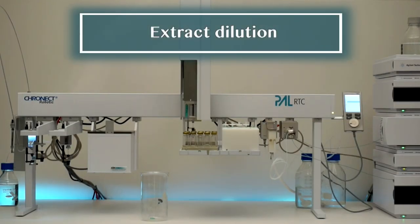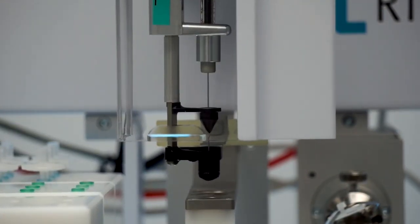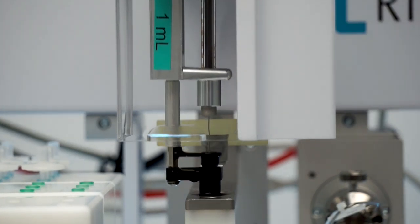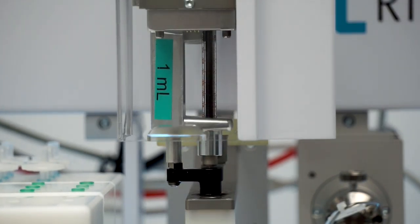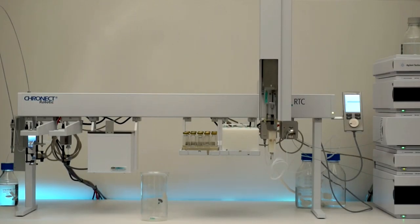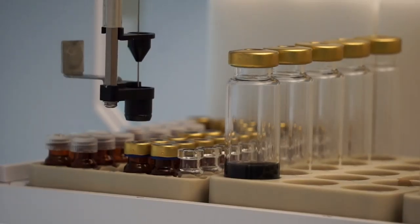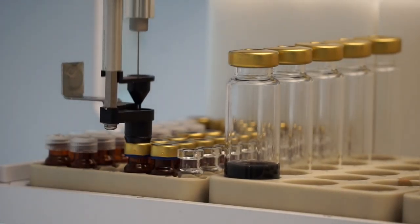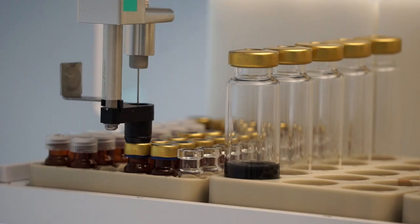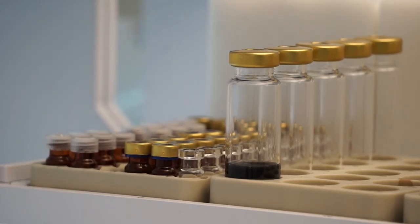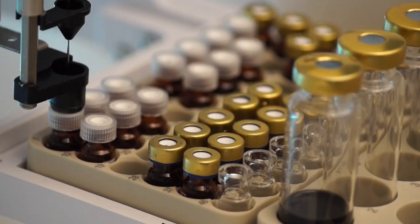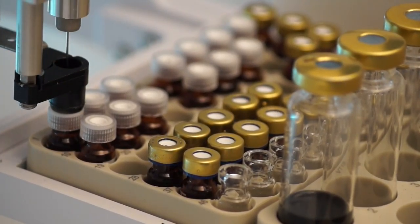Extract dilution. The syringe tool is flushed with the solvents at the wash station, then 10 µL extract from the extract vial with solenoid cap are transferred into the sample vial for dilution. Solvents are drawn into the syringe for dilution and also injected into the sample vial.